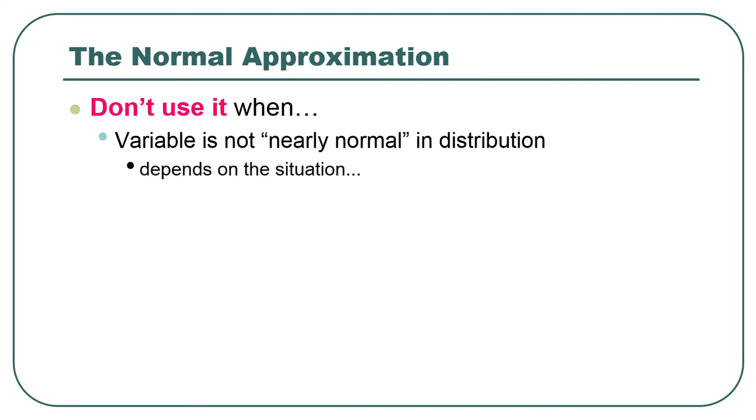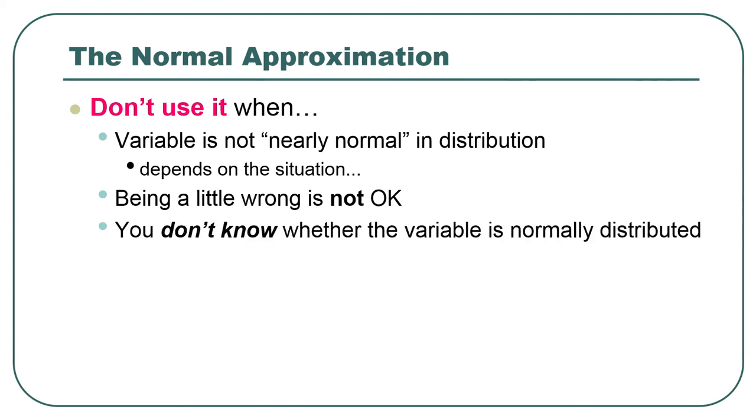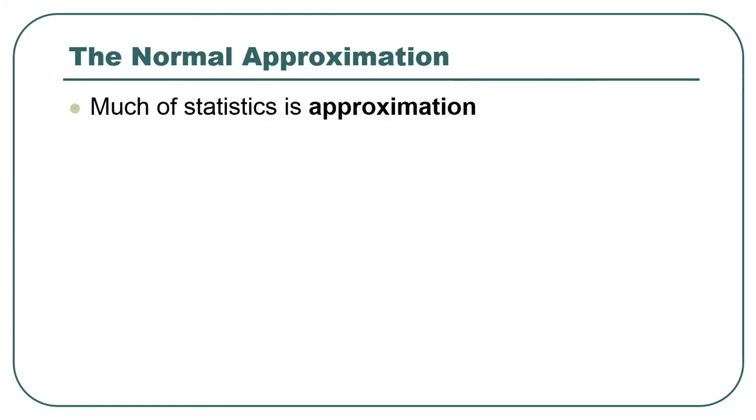But sometimes if it's not nearly normal, we just want such a rough approximation that being wrong doesn't matter very much. I mean, we might bend this rule because it depends on the situation. If being a little bit wrong even is not okay, then don't do this. Don't use the normal approximation. And if you don't even know whether the variable is normally distributed, most of the time you should not use the normal distribution or the normal approximation.